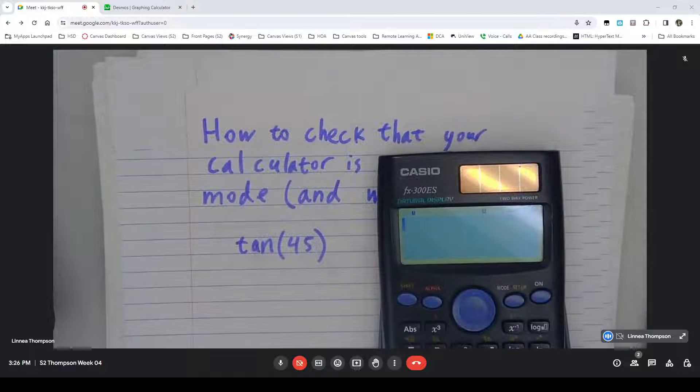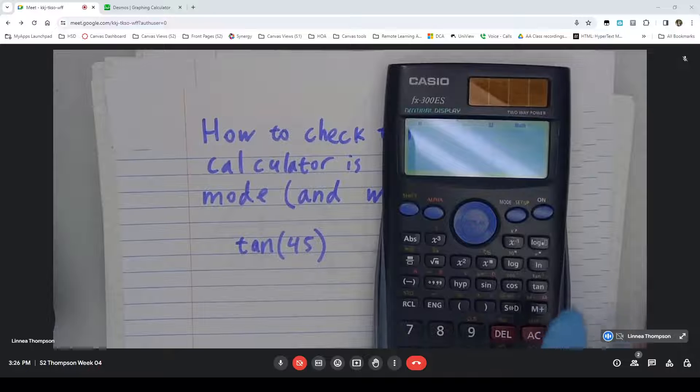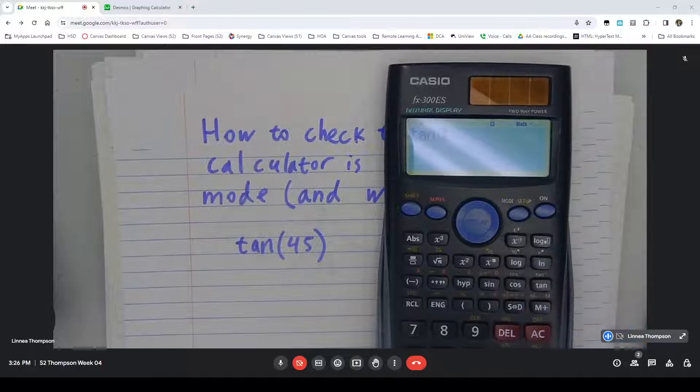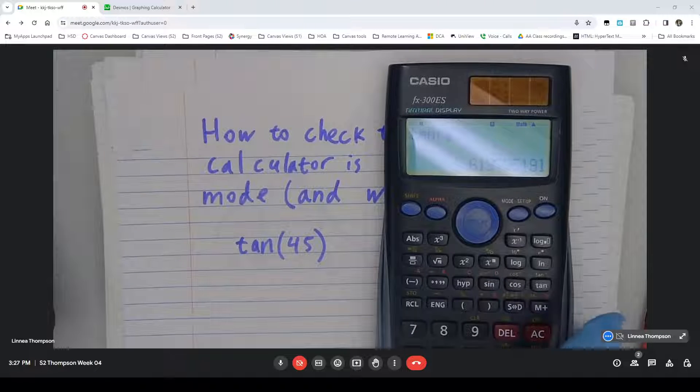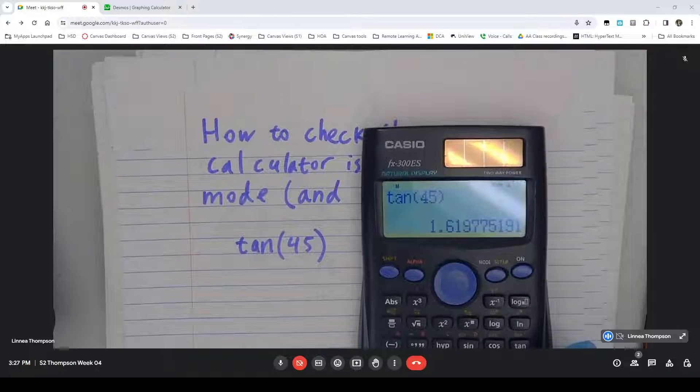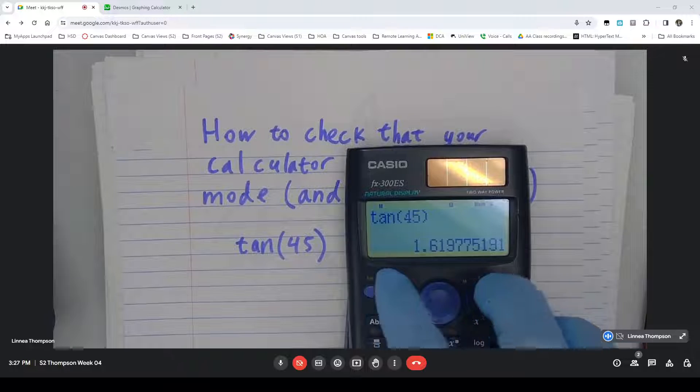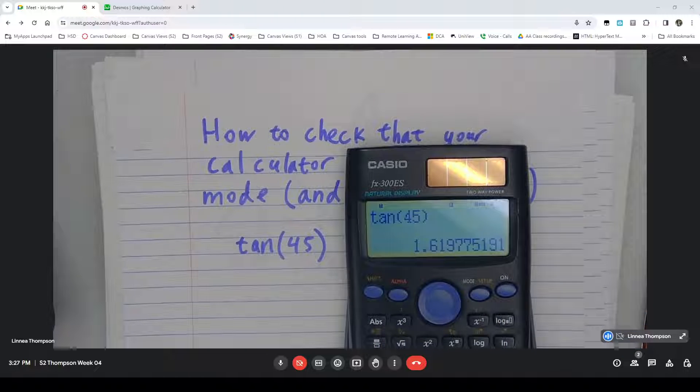So if I take a calculator that's turned on I find my tangent button that's right here and just put in 45, and if I get a long string of numbers like this after the one, it is in radians mode.